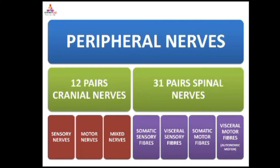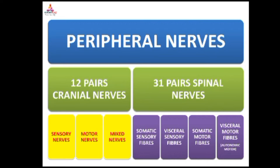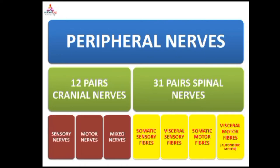The peripheral nervous system is again divided into cranial nerves and spinal nerves. We have 12 pairs of cranial nerves and 31 pairs of spinal nerves. Cranial nerves are classified as sensory nerves, motor nerves, and mixed nerves. Spinal nerves have somatic sensory fibers, visceral sensory fibers, somatic motor fibers, and visceral motor fibers, also known as autonomic motor nerves.